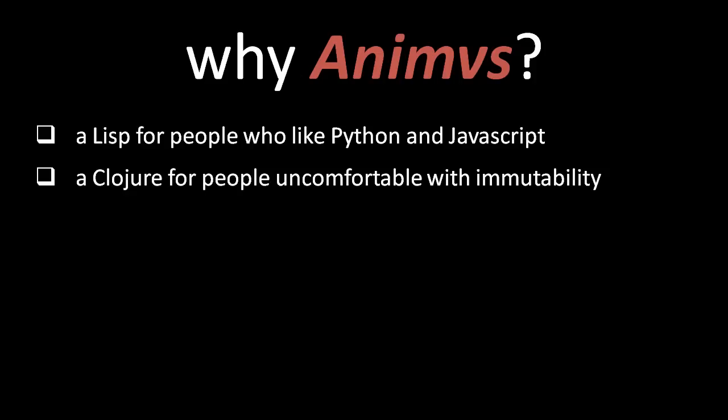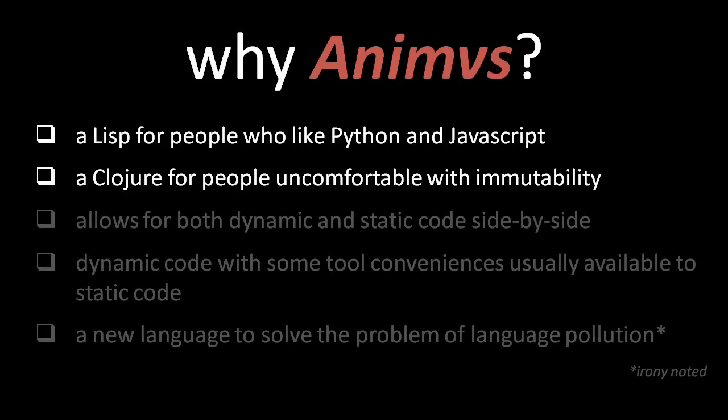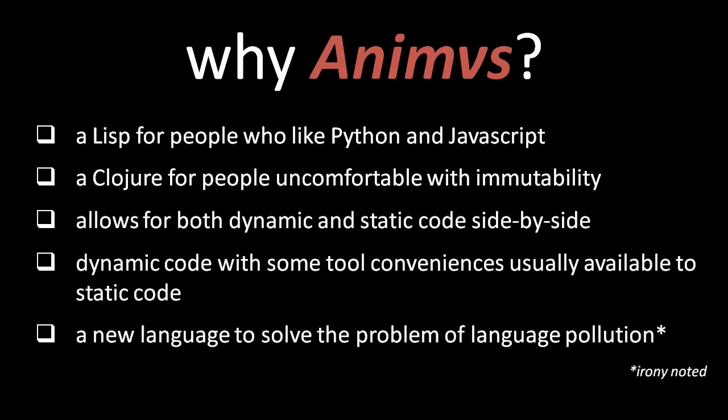Most notably, Animus makes it easier to program in a more familiar imperative style rather than Clojure's usual functional style. Aside from this, Animus makes a few changes that allow tools to give you some of the conveniences you usually only expect in static languages, like the ability to reliably do name refactoring. Another goal of Animus is to do something about language pollution — that is, the proliferation of all sorts of different domain-specific languages.